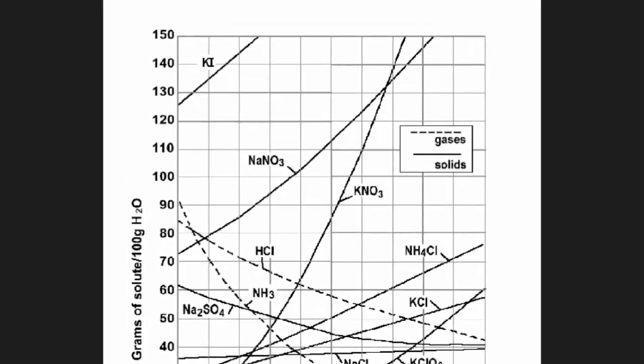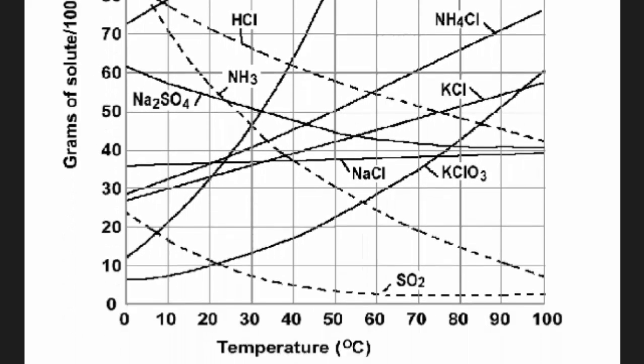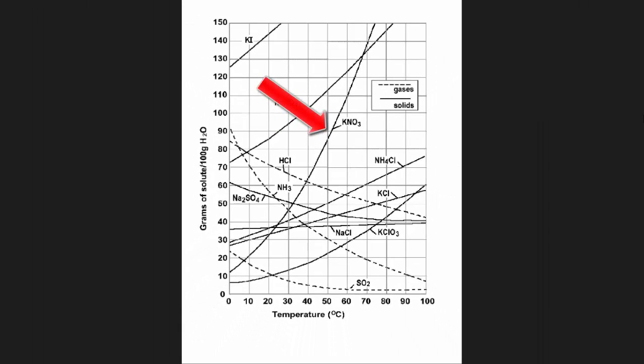So here's a solubility curve. These are a number of different substances. You'll see each line is labeled with a formula for a substance. So we have KI at the top. That's called potassium iodide. NaNO3 is sodium nitrate. KNO3 potassium nitrate and so on. And these lines cross through the graph. Now on the x-axis we have the temperature in degrees Celsius. And on the y-axis we have the amount of solute that can dissolve into 100 grams of water to make a saturated solution. So if I, for example, find the KNO3 line and I look and see at 50 degrees how much KNO3 can dissolve into 100 grams of water.